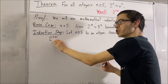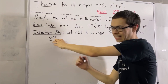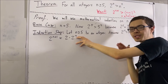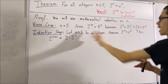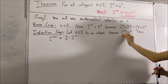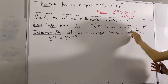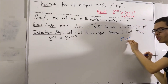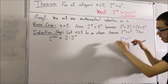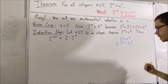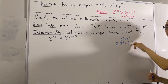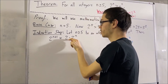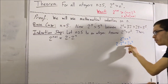First of all, 2 to the n plus 1 is just 2 times 2 to the n. And notice, we have a 2 to the n, so it's probably a good time to use our induction hypothesis. Let's apply the fact that 2 to the n is greater than n squared. We can take this inequality and multiply 2 on both sides, and we see that 2 times 2 to the n is greater than 2n squared.